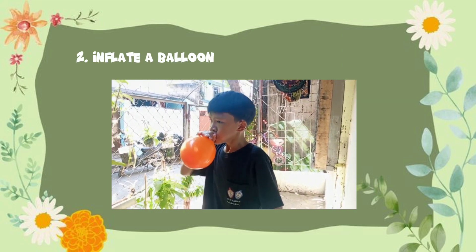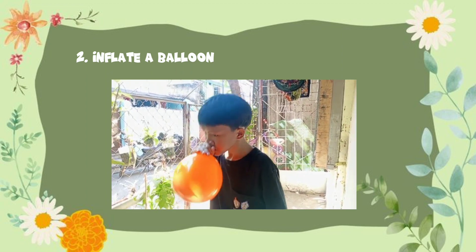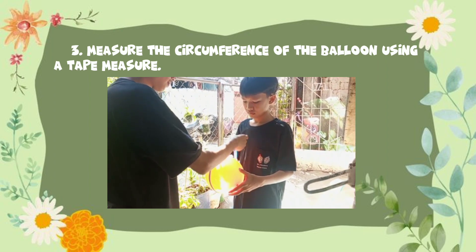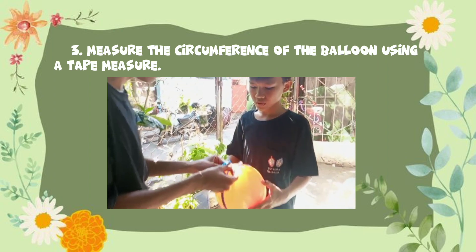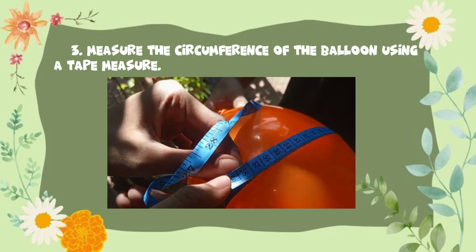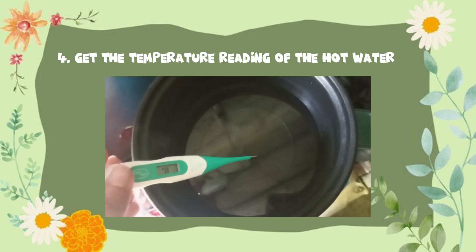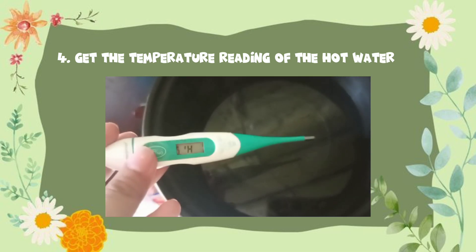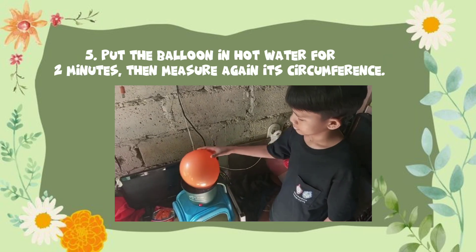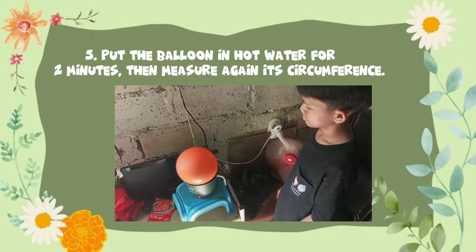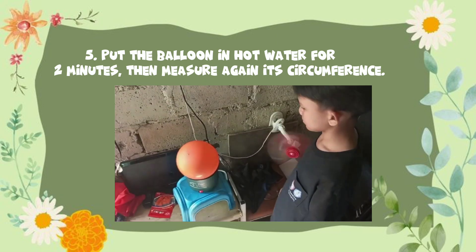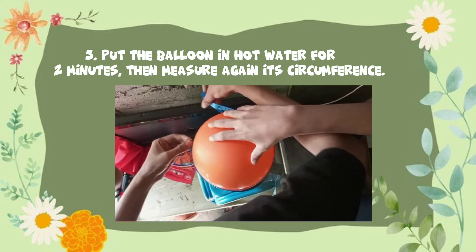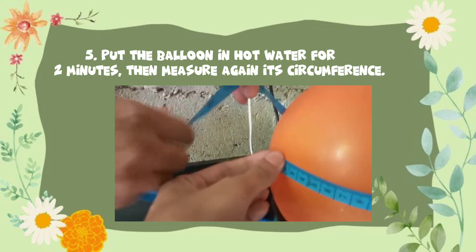Number 2: inflate a balloon. Number 3: measure the circumference of the balloon using a tape measure. Number 4: get the temperature reading of the hot water. Number 5: put the balloon in hot water for 2 minutes, then measure again its circumference.